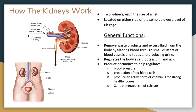A little about how the kidneys work. We typically have two kidneys, each the size of a fist, and they're located on either side of the spine at the lowest level of the ribcage. The general functions include removing waste products and excess fluid from the body by filtering blood through small clusters of blood vessels and tubes and producing urine as the final product. The kidneys also regulate the body's salt, potassium, and acid, and produce hormones to help regulate blood pressure, the production of red blood cells, producing an active form of vitamin D for strong healthy bones, and the control of metabolism of calcium.